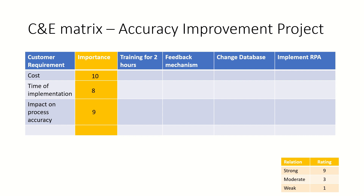In this particular example, the importance given by the customer on the requirements is: they want cost to be less, with an importance rating of 10. The impact on process accuracy should be high, with an importance rating of nine. And time of implementation should be less, with an importance rating of eight. The arrows on the left-hand side indicate direction — downward means less and upward means more.